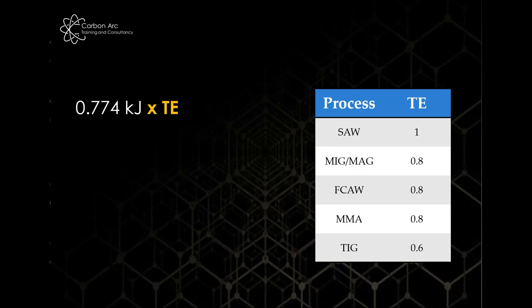So we've been looking at MMA welds up to now. So let's take our MMA value of 0.8 and put that into the equation. So now we get 0.774 times 0.8. And then we get a heat input value of 0.619 kilojoules.